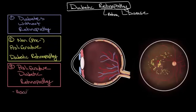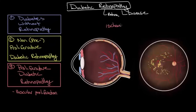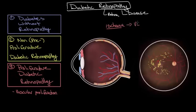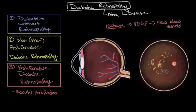As its name suggests, proliferative diabetic retinopathy is characterized by vascular proliferation within the retina. The reason for this is that all of the microvascular damage that occurs in the first two stages results in ischemia — a lack of oxygen supply to the cells of the retina. What the retina does is try to compensate for this ischemia by producing a growth factor known as VEGF, which stands for vascular endothelial growth factor. VEGF does exactly what its name suggests — it produces new blood vessels. However, in diabetic retinopathy these blood vessels are abnormal and the retina is not able to compensate for the ischemia.